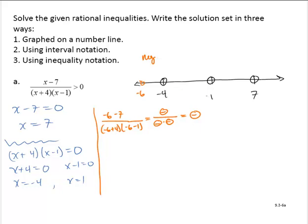Testing between negative 4 and 1, how about 0? I would have 0 minus 7 over 0 plus 4 times 0 minus 1. That's a negative number divided by a positive number times a negative number, so a negative divided by a negative is a positive.